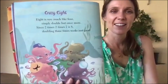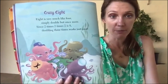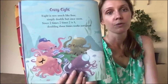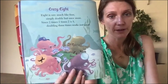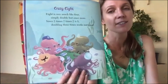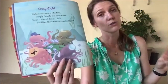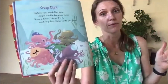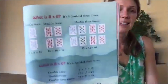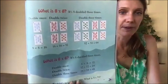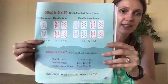Crazy eights: 'Eight is very much like four, simply double but once more. Since two times two times two is eight, doubling three times works just great.' So for the twos we doubled once, for the fours we double-doubled, and for the eights we double-double-double.